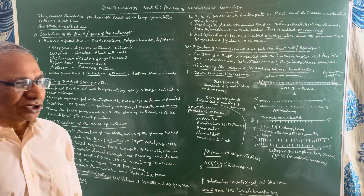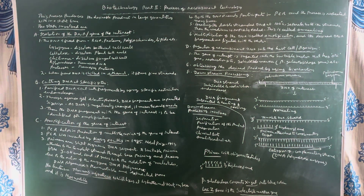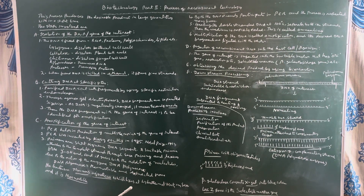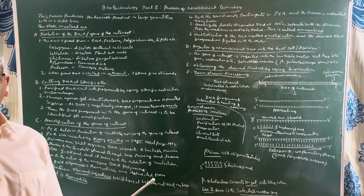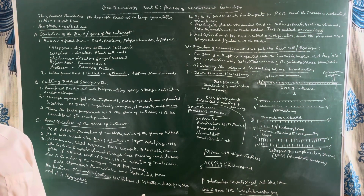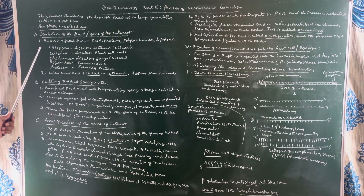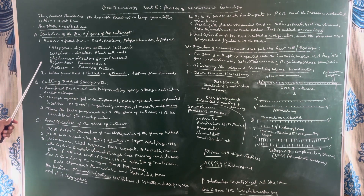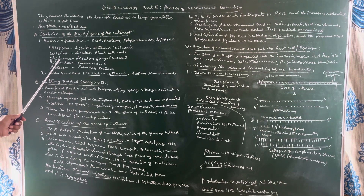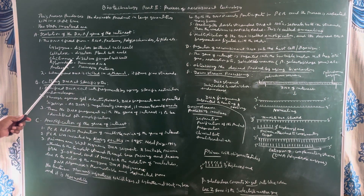Now let us see the steps involved in recombinant technology. The first step is isolation of the DNA, or the gene of interest. If the DNA has to be extracted from a bacterial cell, the cell wall is first dissolved by an enzyme known as lysozyme. For plant cells, the enzyme cellulase is employed. To extract DNA from fungus, the enzyme chitinase is used to dissolve the cell wall of fungal cells.